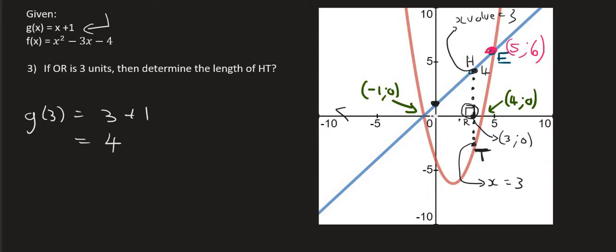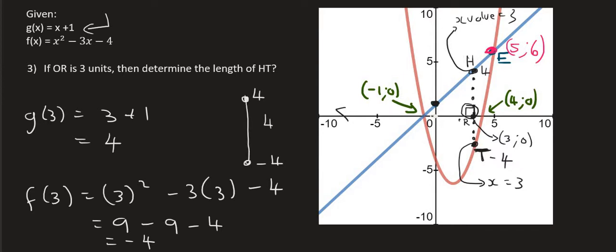Then we can plug an X value of three into the parabola's equation for T, because T is on the parabola. So that will say f(3) equals to 3 squared minus 3 times 3. Notice I use a bracket, and that's going to give us 9 minus 9 minus 4. And that's going to give us minus 4. So the Y value of T is minus 4. So if you have a Y value of 4 and another Y value of minus 4, then what is that distance? Well, it's 8, because it's 4 minus minus 4, which is 8. So the length of HT will be 8 units.